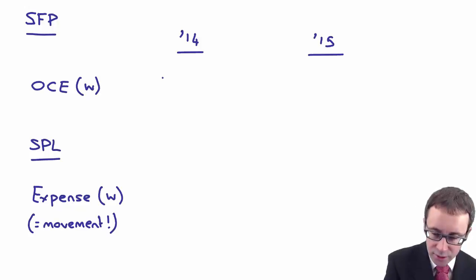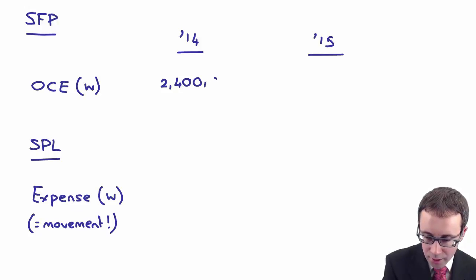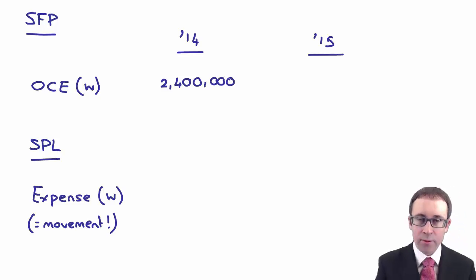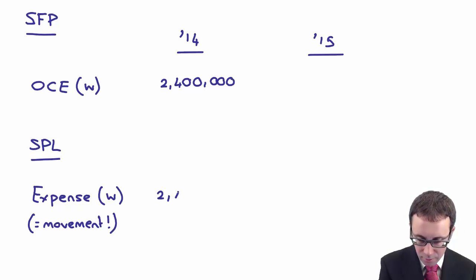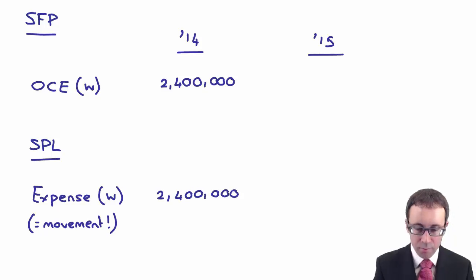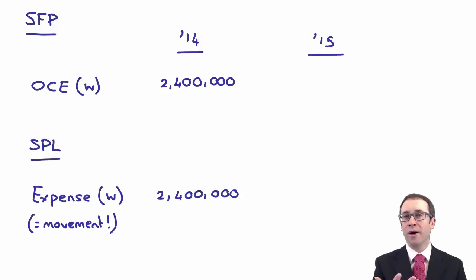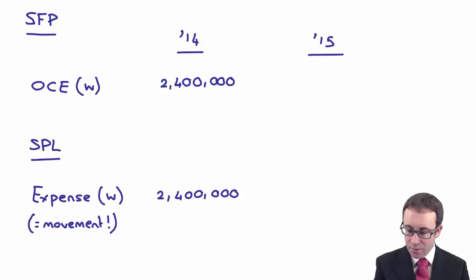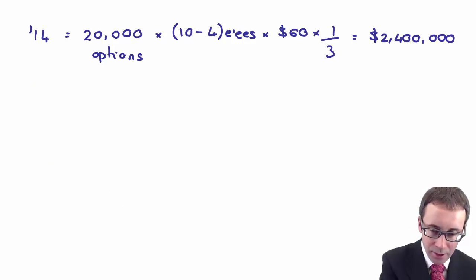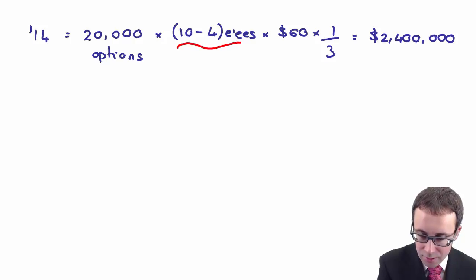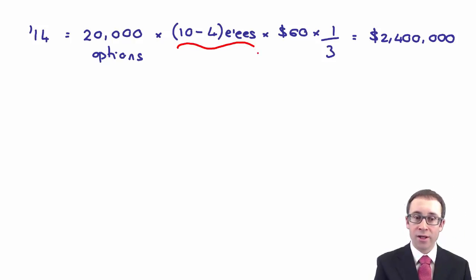The first year is normally quite straightforward. When you recognise the other component of equity at $2.4 million, the movement is the same because we've gone from zero at the start of the year up to a $2.4 million balance. The key bit in this example is that we are taking account of the expected number of leavers.